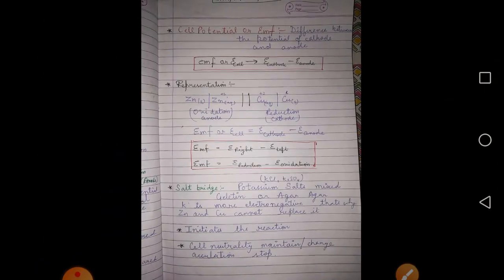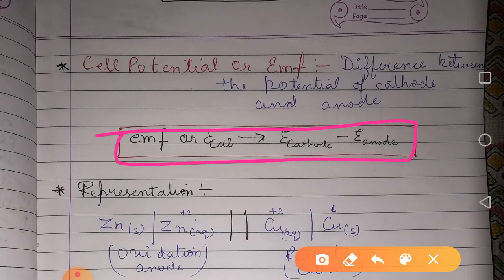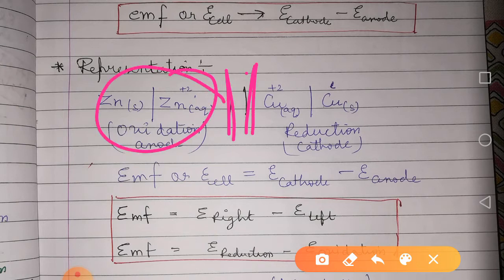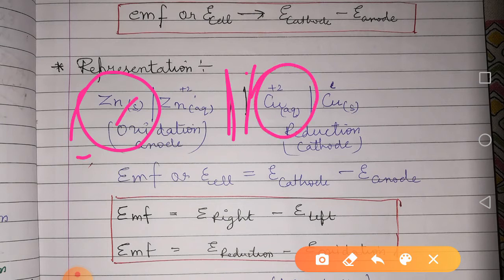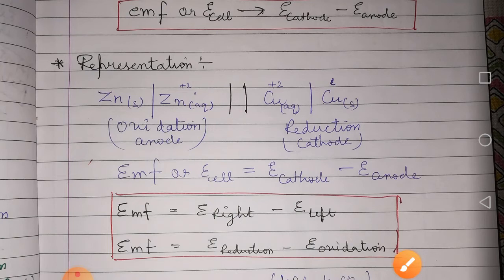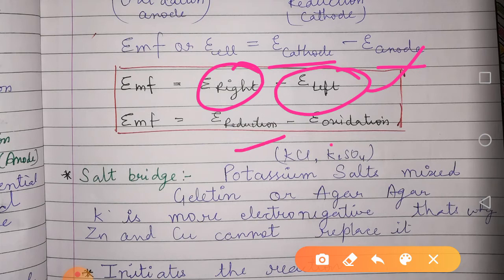The formula for EMF (electromotive force) is: EMF = electrode potential of cathode − electrode potential of anode. To represent the cell, we divide it into two parts using the salt bridge notation. The left-hand side shows the anode (oxidation) and the right-hand side shows the cathode (reduction), with Zn as the anode electrode and Cu as the cathode electrode.